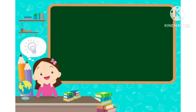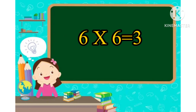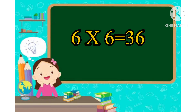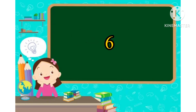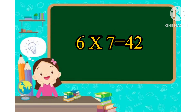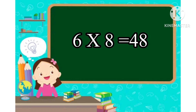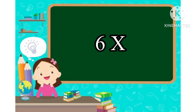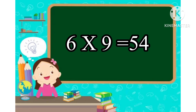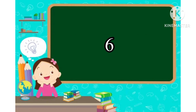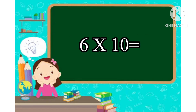6 sixes are 36. 6 sevens are 42. 6 eights are 48. 6 nines are 54. 6 tens are 60.